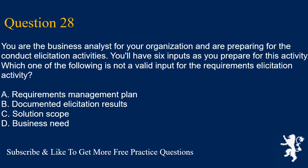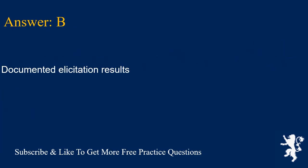Question 28: You are the business analyst for your organization and are preparing for the conduct elicitation activities. You'll have six inputs as you prepare for this activity. Which one of the following is not a valid input for the requirements elicitation activity? A. Requirements management plan. B. Documented elicitation results. C. Solution scope. D. Business need. Answer is B. Documented elicitation results.